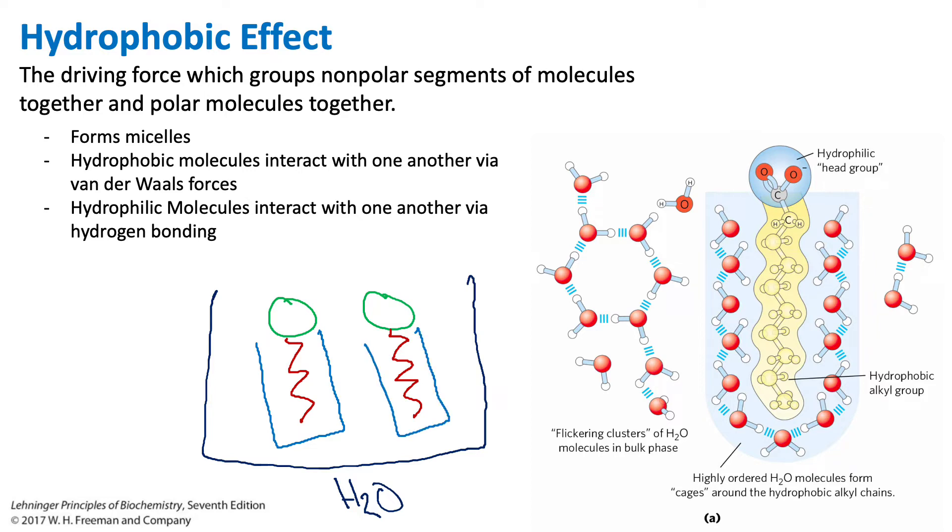Now this cage allows less interaction with water, but the downside is that this requires a lot of energy because before water was highly disordered. It was just randomly dispersed throughout this glass. But now this water is highly ordered around the hydrophobic region of the phospholipid. So we know that randomness is associated with entropy. So if there's less randomness, your entropy will decrease, but your energy will increase.